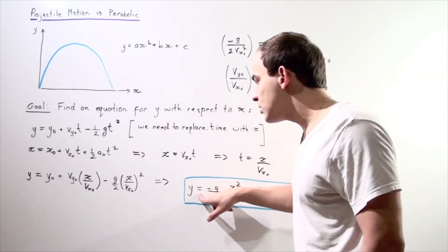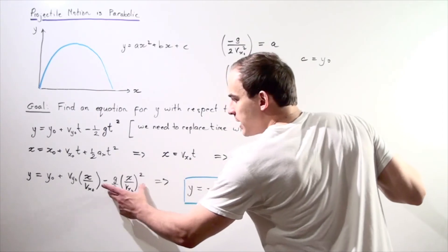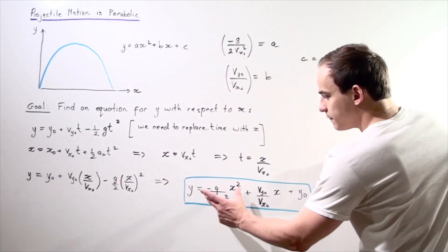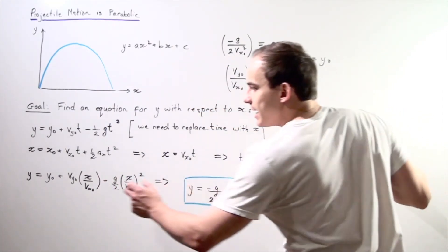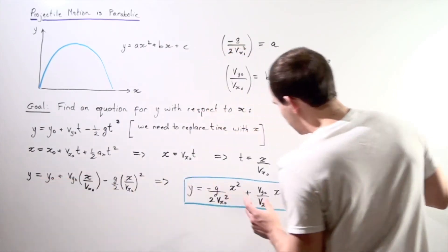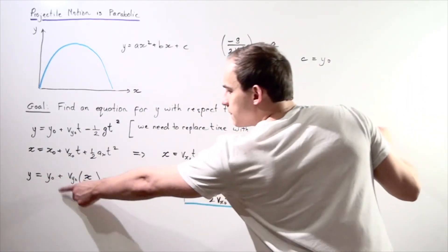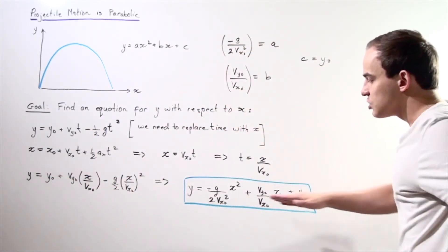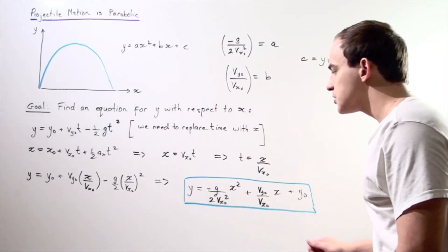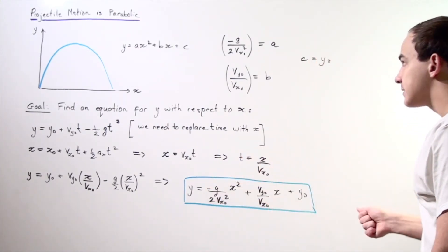So y is equal to—we take this term and bring it to the front, we get the following result. Then we take this term and bring it to the end, and we leave this term in the middle. So we get the following equation that gives us y in terms of x.